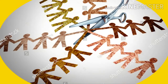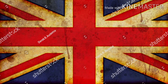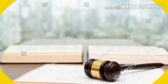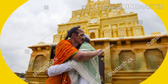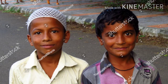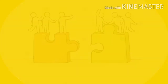Divide and Rule Policy of the British. Gradually, the Indian National Congress became stronger and stronger. Its leaders began to criticize the British government and demand more rights. The British got worried and decided to weaken the freedom movement by dividing Hindus and Muslims. For this purpose, they followed the policy of divide and rule. Bengal, where the movement was very strong, was divided into two parts — one with a Hindu majority and the other with a Muslim majority. The whole country strongly protested against the partition of Bengal.